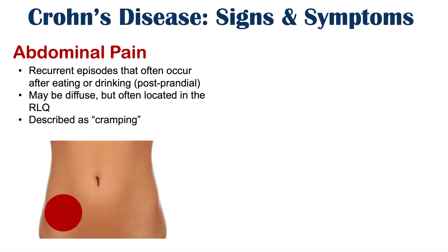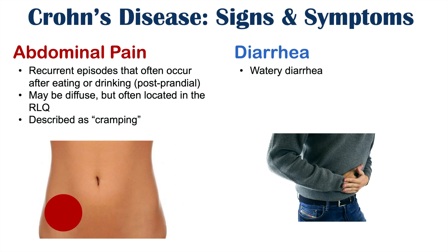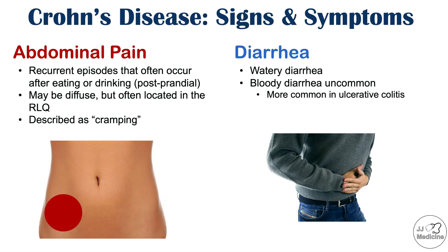Another significant symptom of Crohn's disease is diarrhea — more specifically, watery diarrhea. Bloody diarrhea can happen in Crohn's disease, but it is uncommon, whereas in ulcerative colitis it is more common. This is an important difference in clinical presentation between the two conditions: Crohn's disease tends to present with watery diarrhea, and ulcerative colitis with bloody diarrhea. The diarrhea in Crohn's disease often contains mucus.